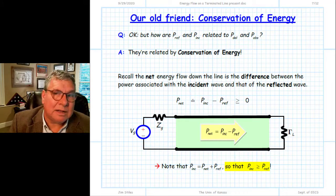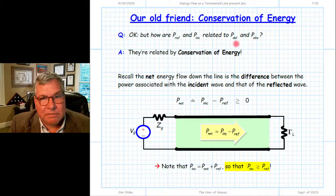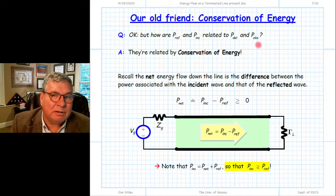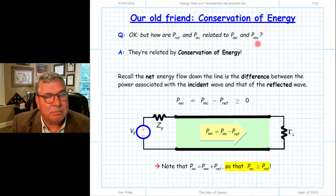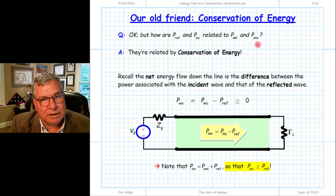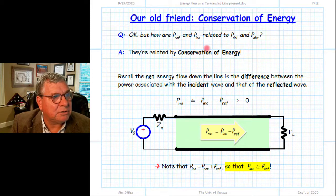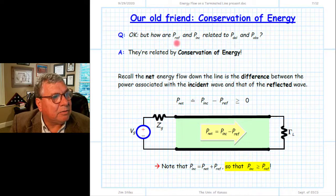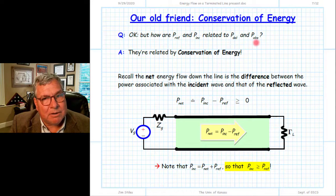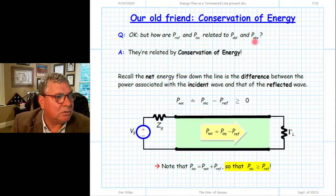We've talked about the power delivered by the source and the power absorbed by the load, and argued that because the transmission line is lossless these two must be equal to each other. We also looked at reflected power and incident power and determined they are related by the magnitude squared of the load reflection coefficient. The question then is: how are the reflected and incident power related to the delivered and absorbed power? Can we use some argument to determine the relationship between those pairs?